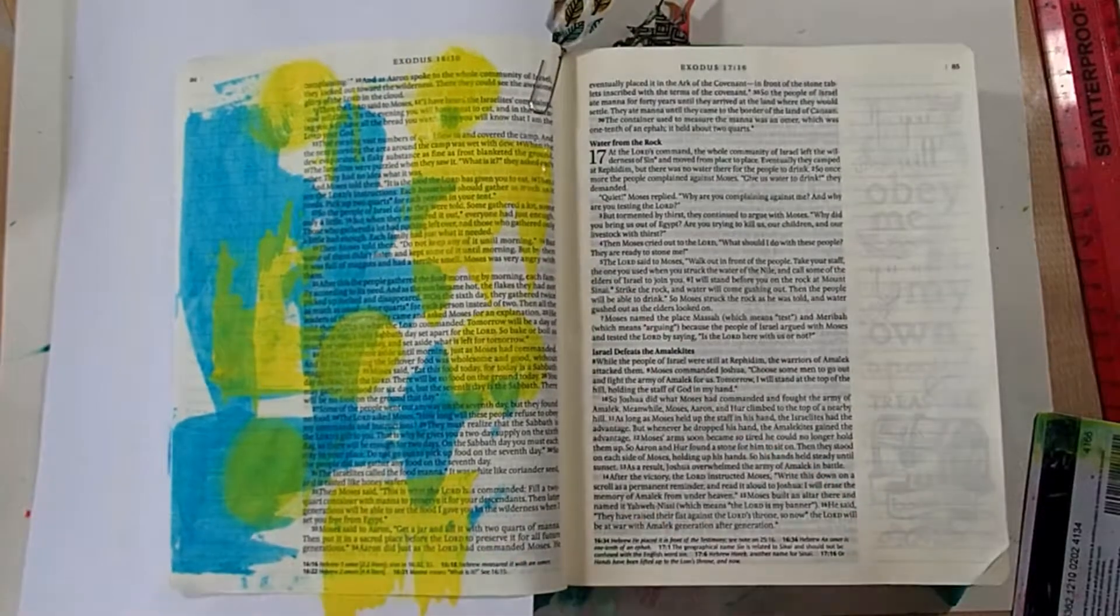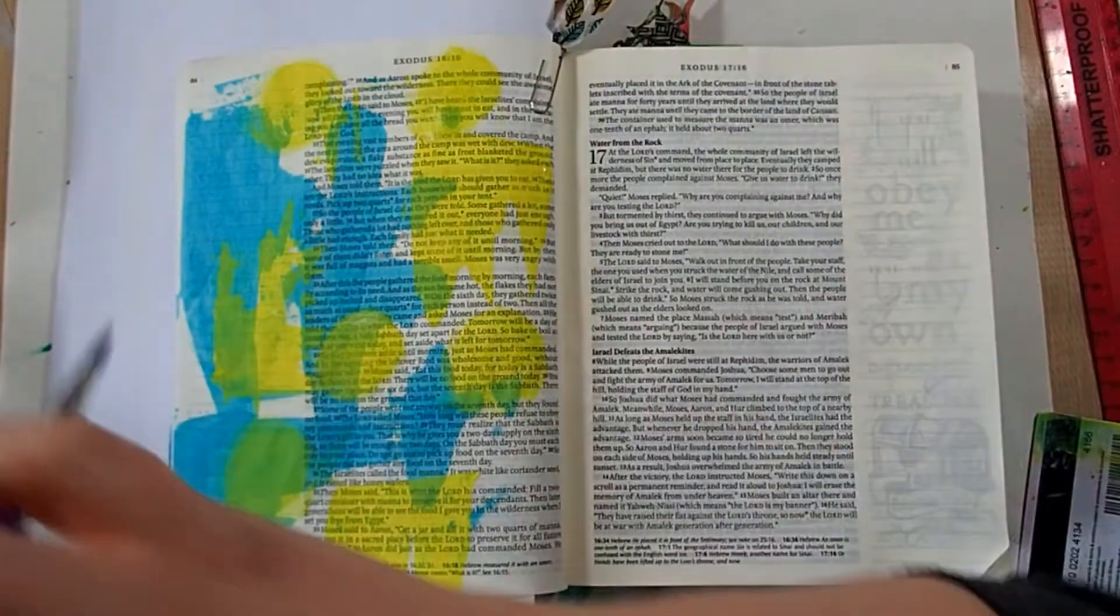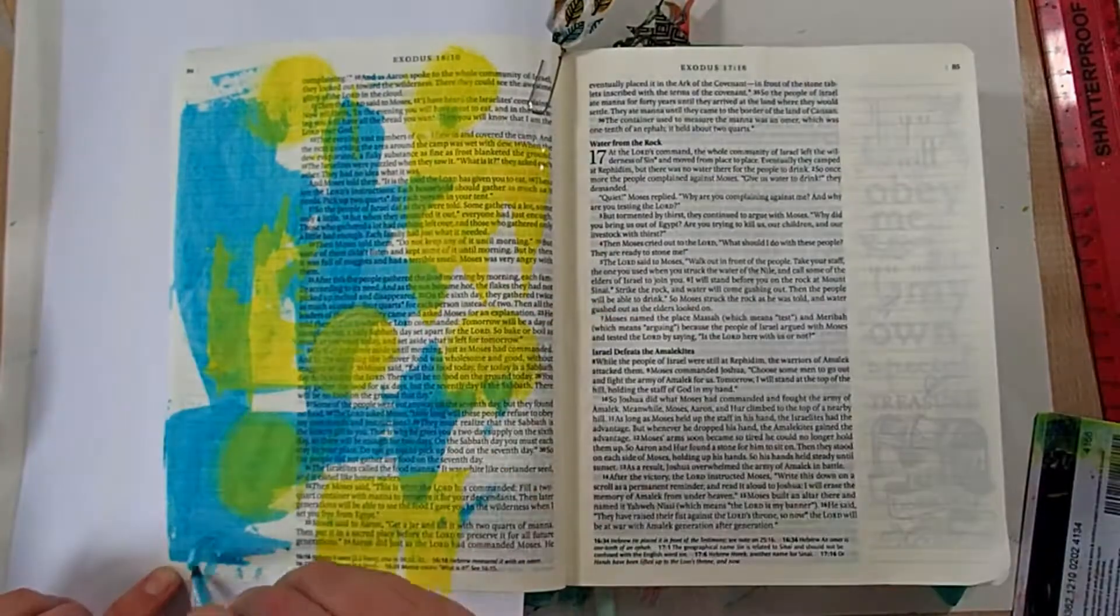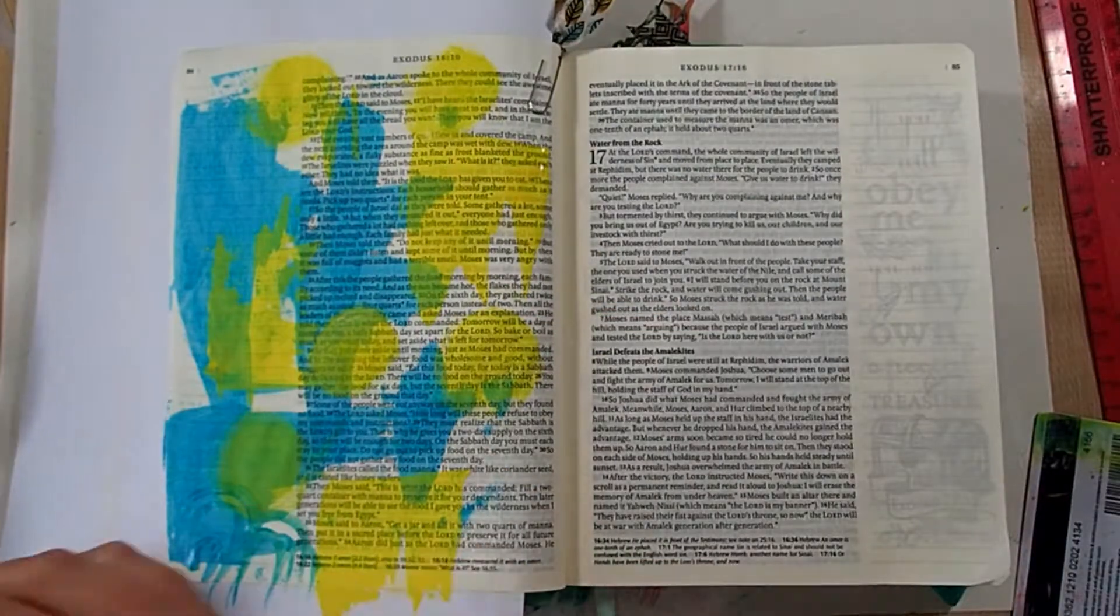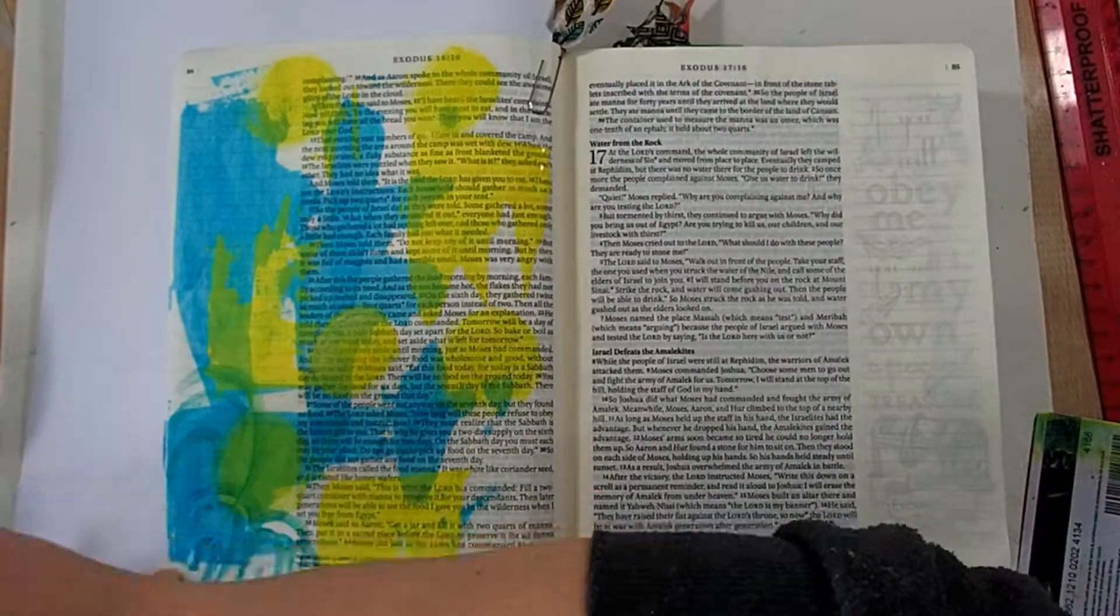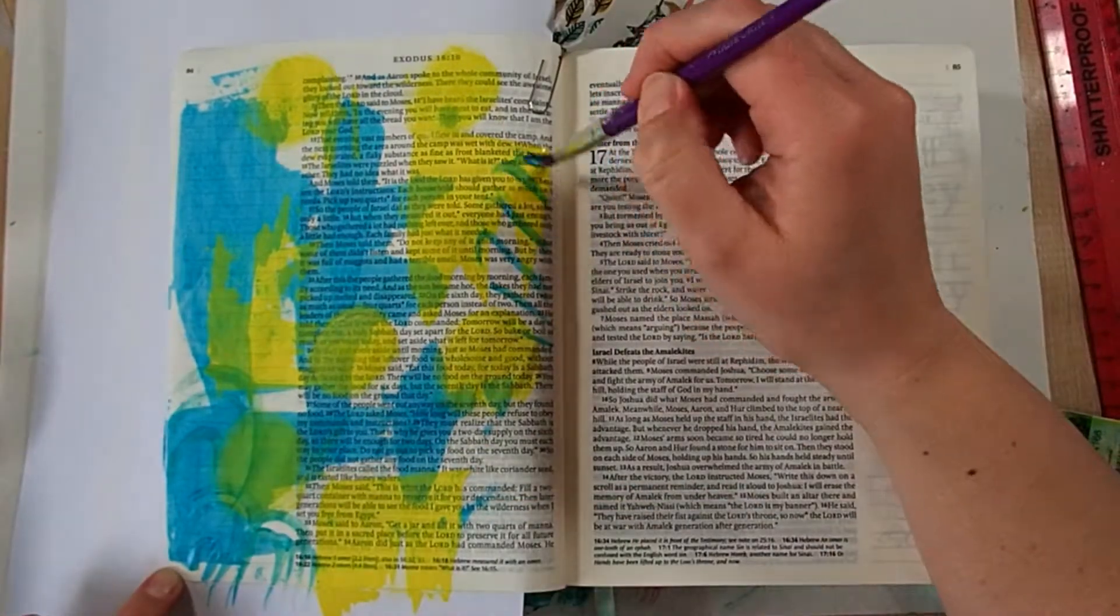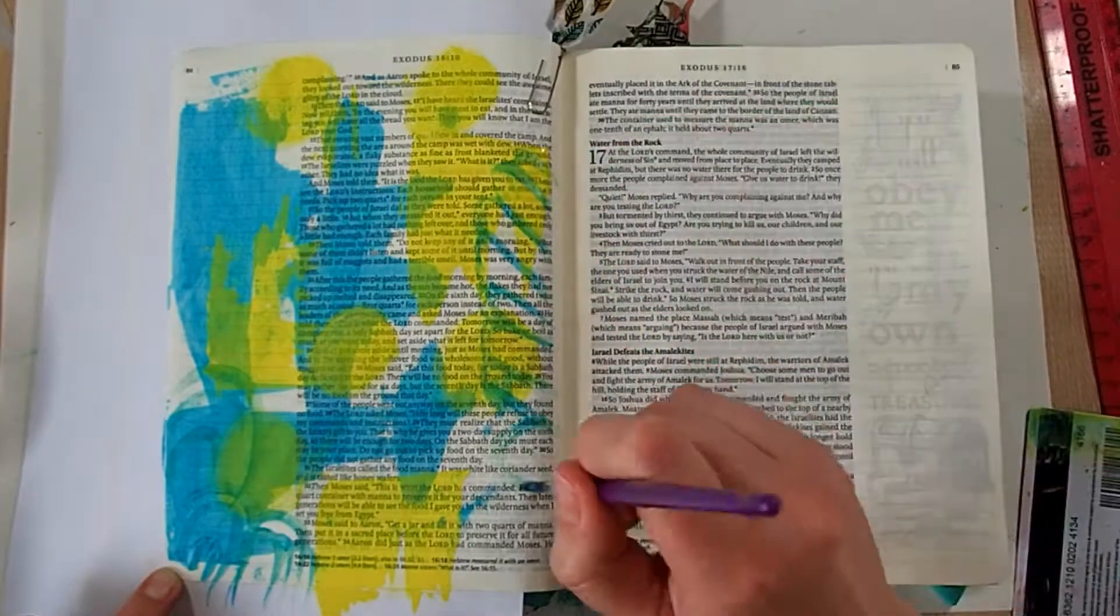I like to use these dilution paints in my Bible because they are translucent, and that means that I can still read the text, which is so very important to me. I'm just making some interest in this background, and that's just something I like to do from doing my art journaling pages.